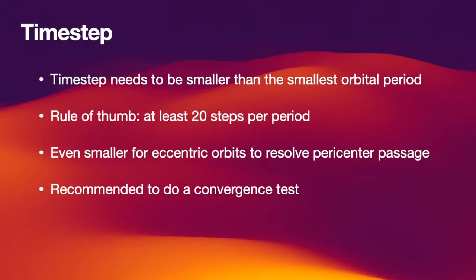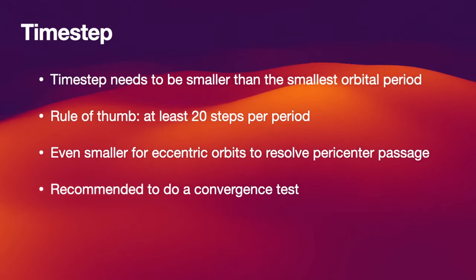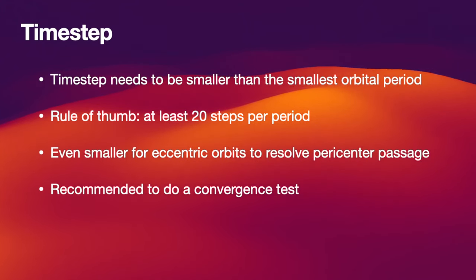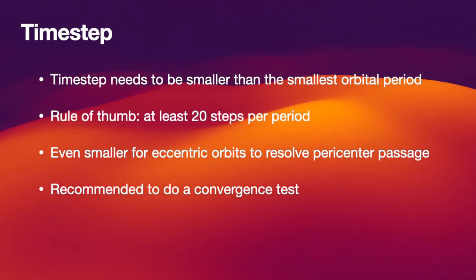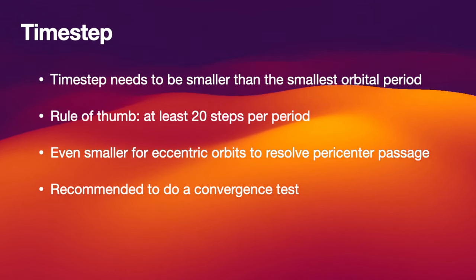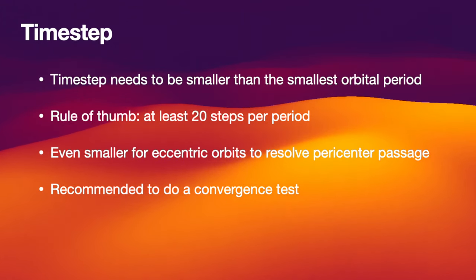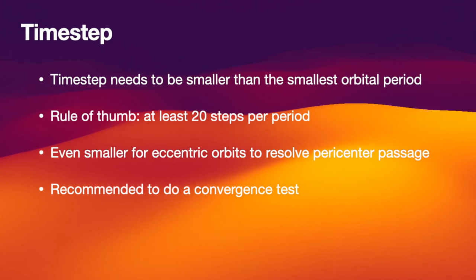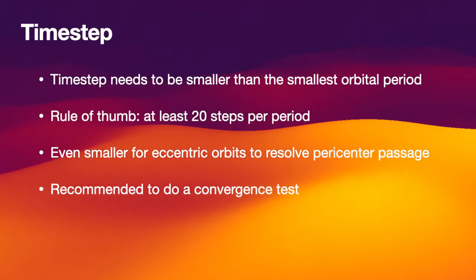Sometimes it can be a bit confusing on how to choose your time step. If you're unsure, I recommend that you do a convergence test. Run your simulations with different time steps and make sure that the physical results that you're interested in — for example, the stability of a planetary system — are not affected by the precise choice of your time step. In general, the smaller you make the time step, the better the simulation should be. If you can afford to use the small time steps, do so.